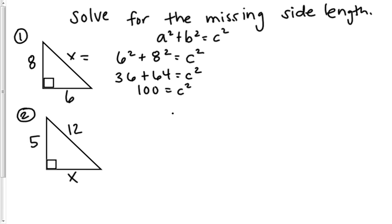Now, that's not my answer yet. To get c, you have to take the square root of both sides. The square root of 100 is equal to 10. So, my hypotenuse, or my x, is equal to 10.